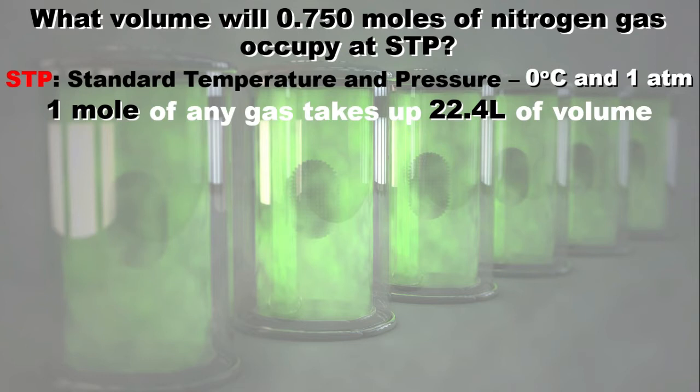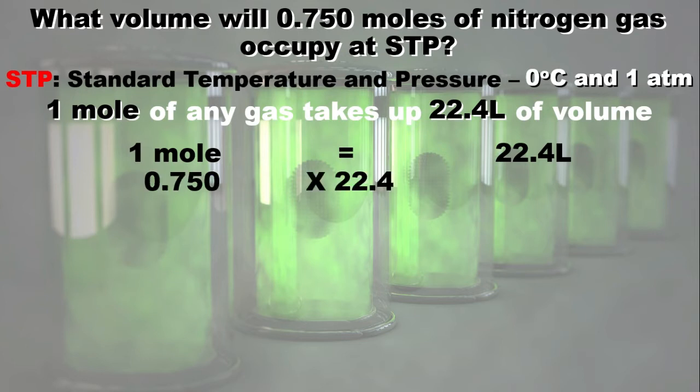We will have this relationship: 1 mole is equal to 22.4 liters. But we don't have 1 mole. What we have is 0.75 moles, which is smaller than 1. So to get the volume, we have to multiply this by 22.4 liters.